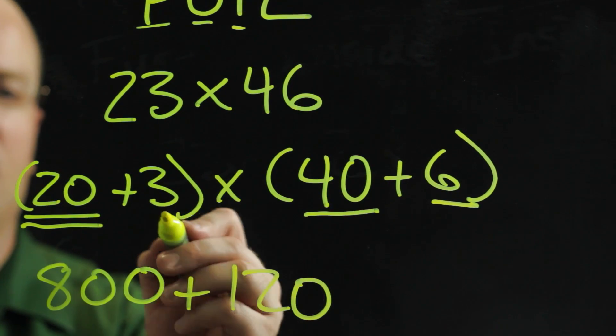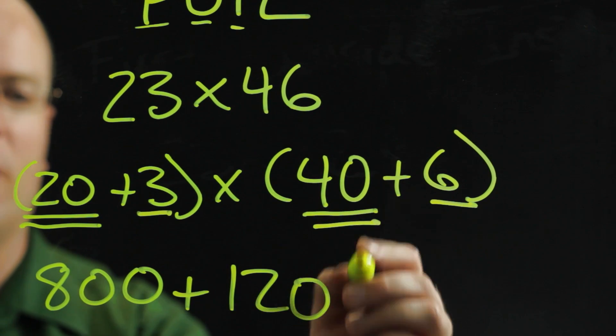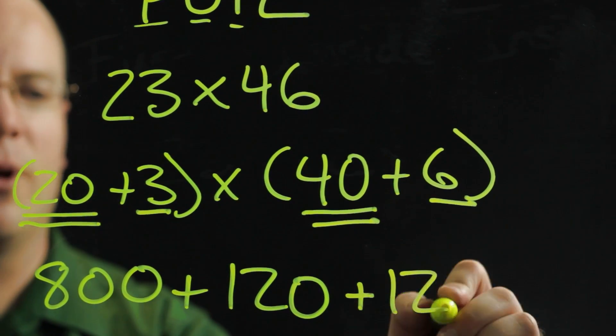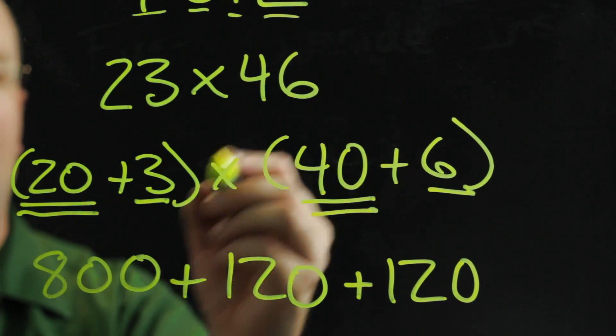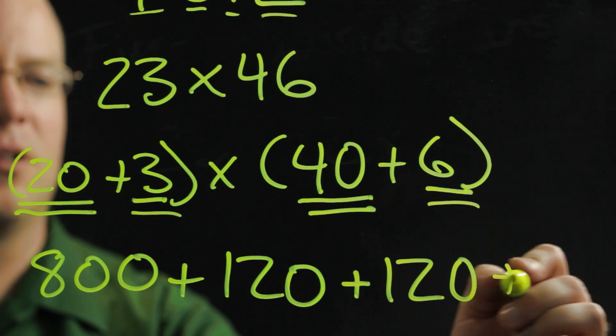The inside numbers, which is 3 and 40. Hey, that's also 120. And then the last is 3 times 6, which is 18.